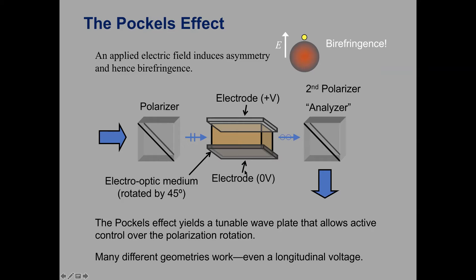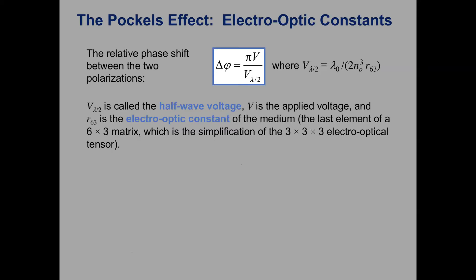The phase shift we get in this induced wave plate is proportional to the voltage applied. Specifically, the phase shift between the vertical component E_y and horizontal component E_x of the polarization is proportional to the voltage V divided by the half-wave voltage. The half-wave voltage is how much voltage you need to apply to get a phase shift of pi, and it's determined by the properties of the material and the wavelength of light being used. The half-wave voltage is proportional to the wavelength — longer wavelengths require higher voltage — and is inversely proportional to the electro-optic constant.